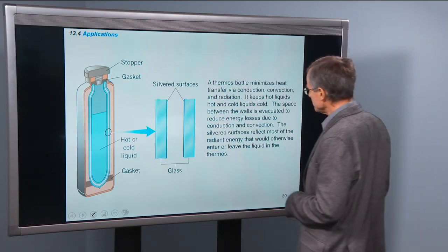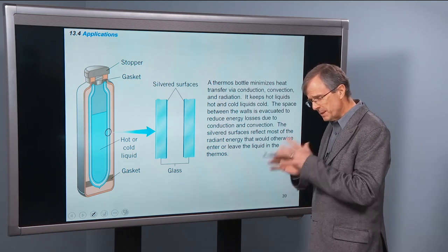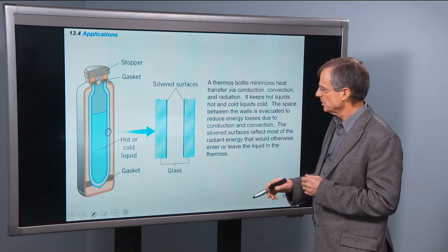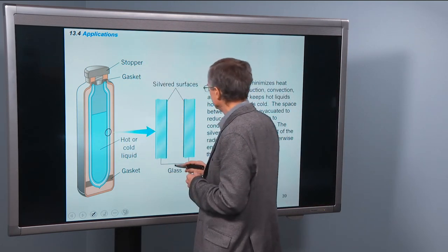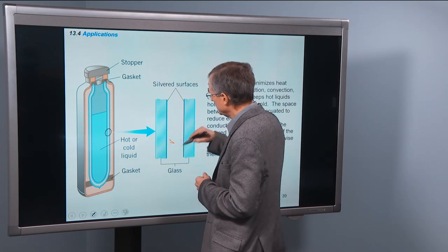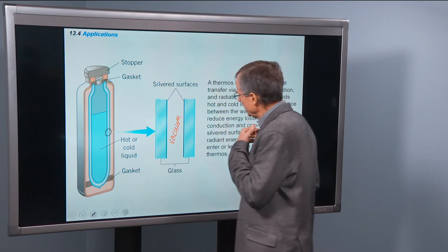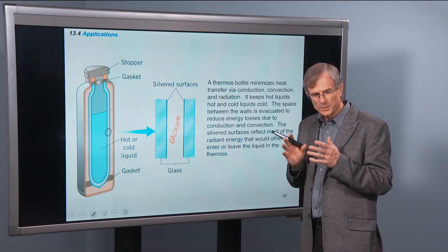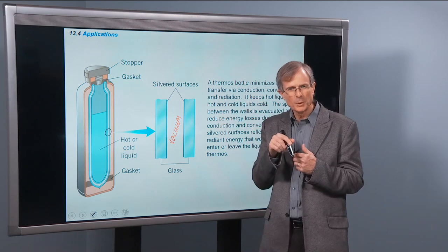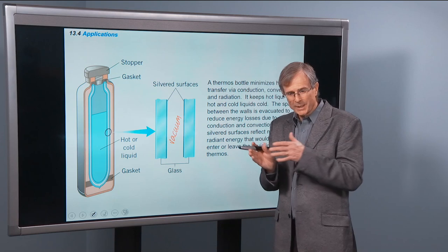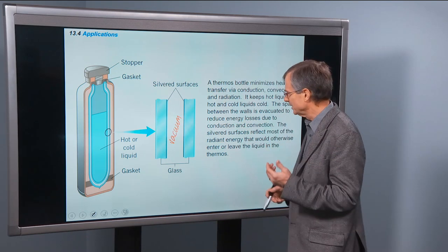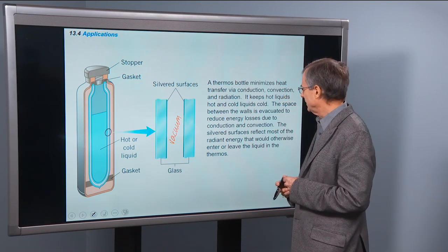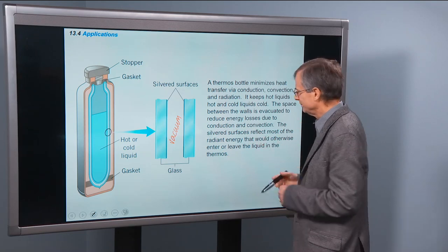Thermos bottle. Minimizes heat transfer via conduction, convection, and radiation. The space between the walls is evacuated. So this is a vacuum in here between the two glass surfaces. And those are silvered surfaces to minimize energy, to minimize the emissivity. If you make that emissivity as low as possible, then you're not going to transfer much heat by radiation. So that minimizes the radiation. The fact that it's a vacuum minimizes heat losses by conduction and by convection. They do a good job.